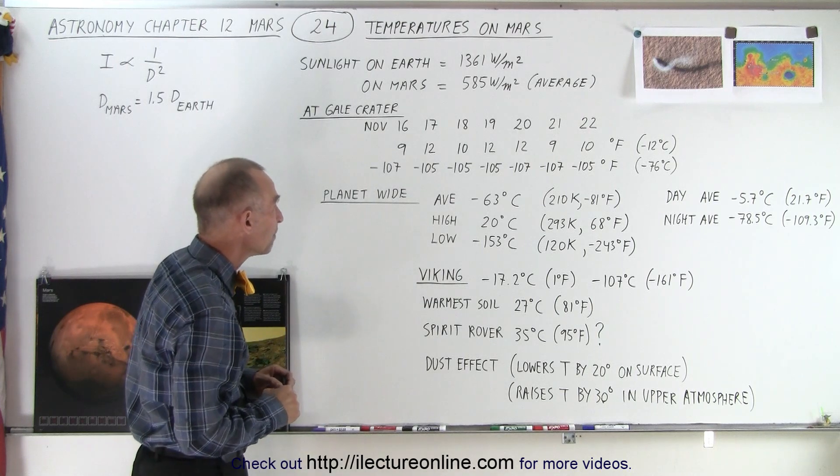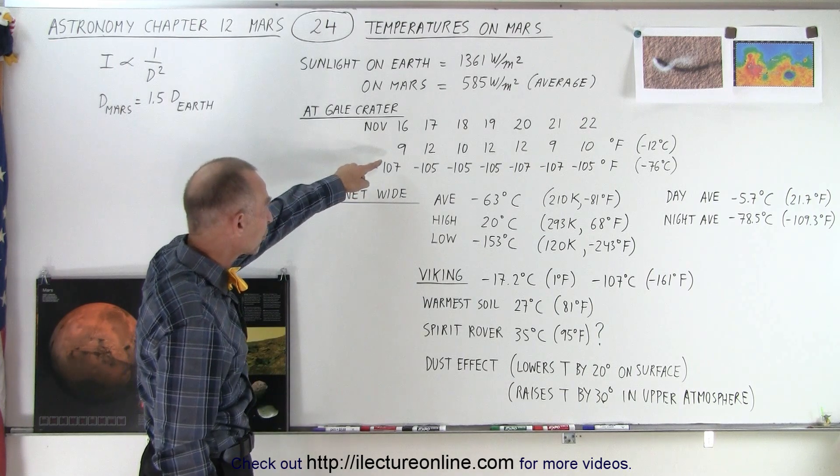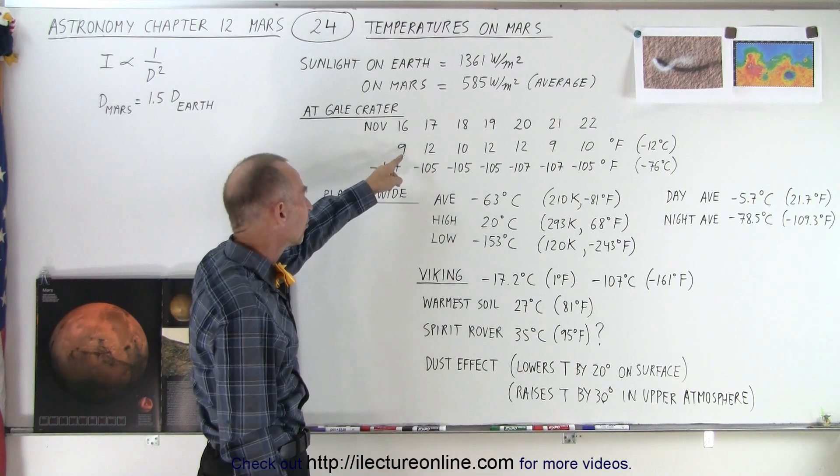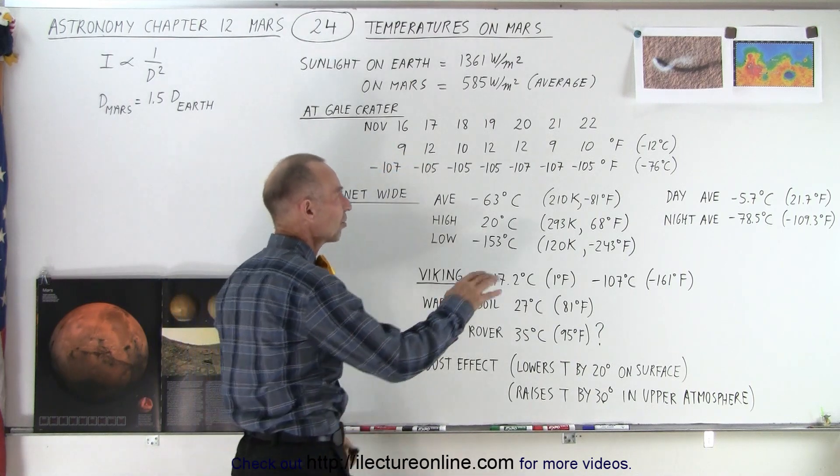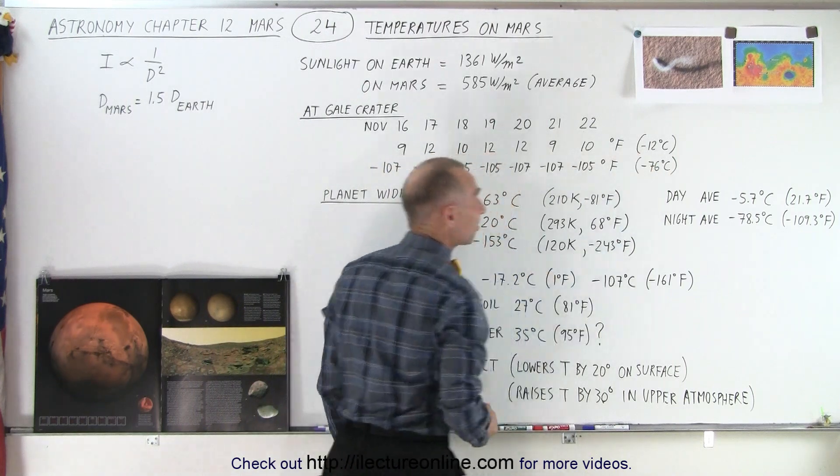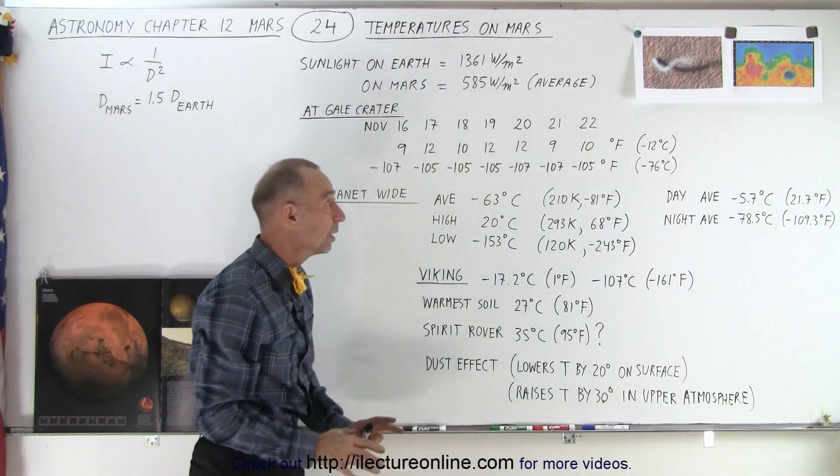We see daytime temperatures that are very consistent from one day to the next. This is in degrees Fahrenheit, which is an average of about minus 12 degrees centigrade—by no means warm, but not bad for Mars.